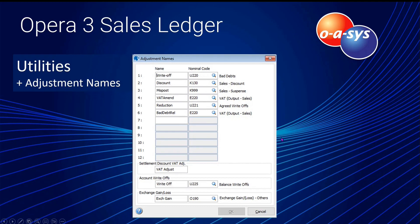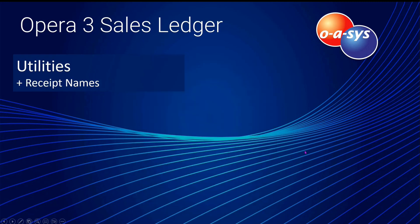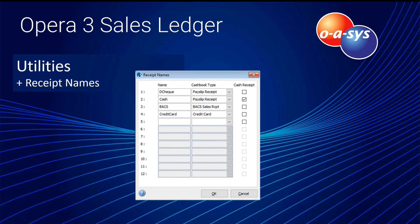In the utilities section, adjustment names define the reasons and nominal ledgers affected when posting an adjustment to the sales ledger account, including codes for foreign exchange gains and losses. Receipt names define how cash is received from customers — by cheque, cash, credit card payment — and whether it hits the bank account immediately or batches together until you go to the bank, posting all items as one sales receipt.